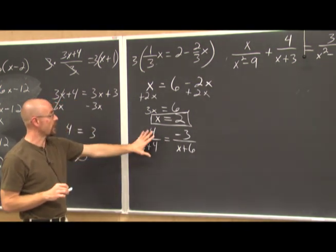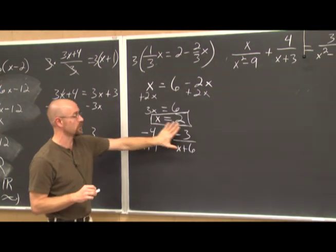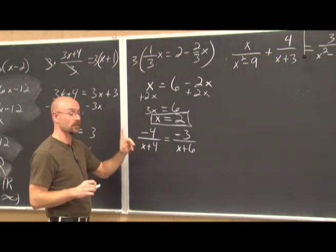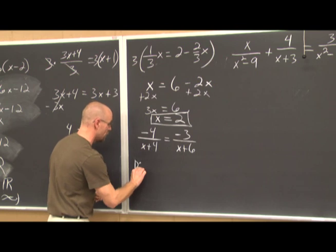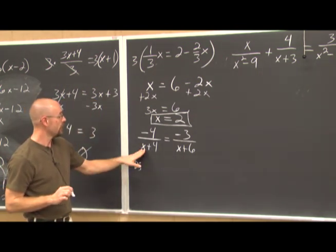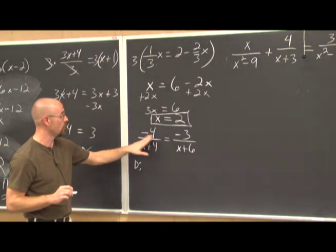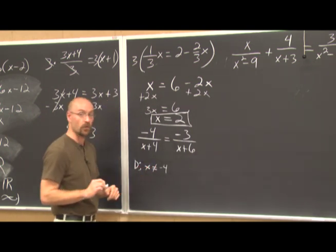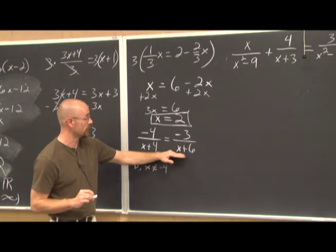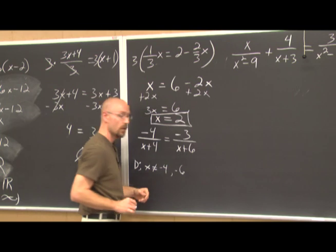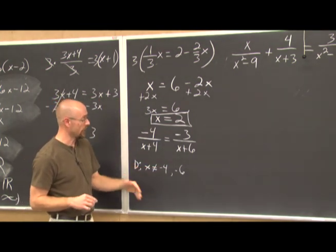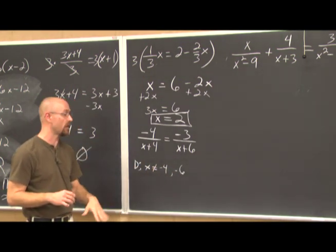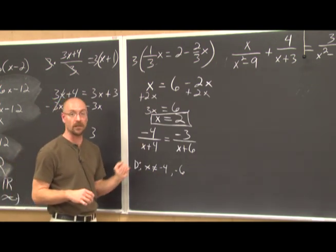Let's look at this next example. I recognize this as a proportion — a fraction equal to a fraction. I notice there are x's in the denominator, so I need to state the domain. If x is negative 4, that denominator becomes 0; and if x is negative 6, that other denominator becomes 0. So x cannot be negative 4 or negative 6. If I end up getting either of those as solutions, they would be extraneous and must be excluded because they make the equation undefined.